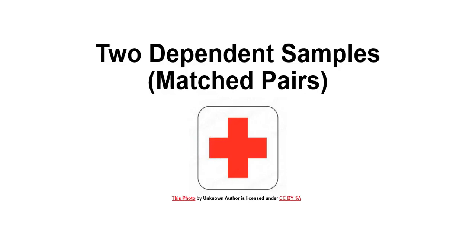Hi there, this is a video covering the matched pairs method for comparing the means for two populations using information from two dependent samples.